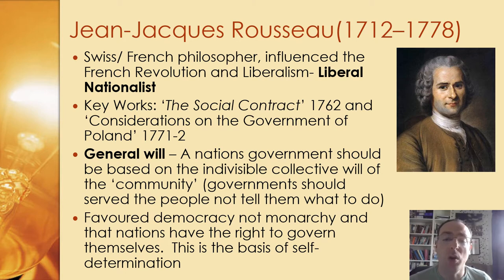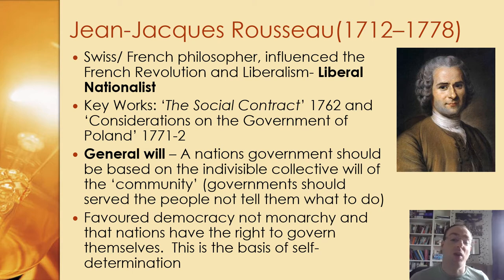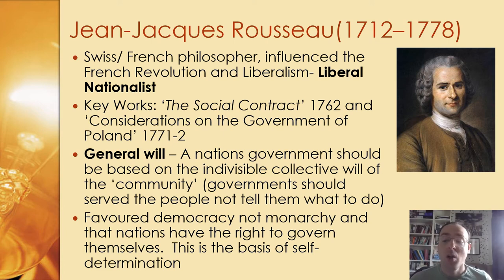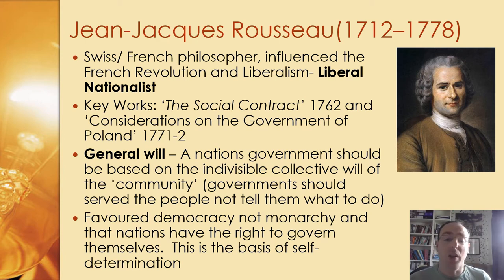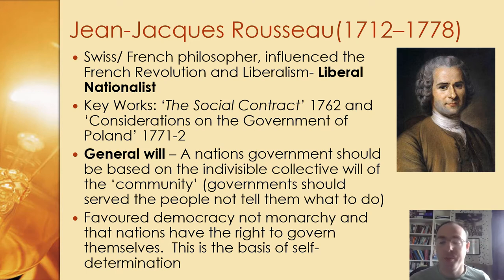He has several key works. Probably the most well-known is The Social Contract, which he wrote in 1762. He also wrote Considerations on the Government of Poland in 1771-1772, which is really important in terms of reflecting some of his ideas on nationalism. One of his key concepts is the idea of the general will — a nation's government is based on the indivisible collection of will of the community.